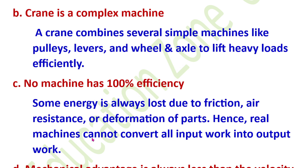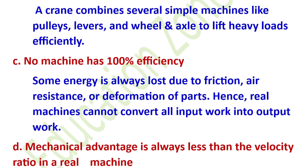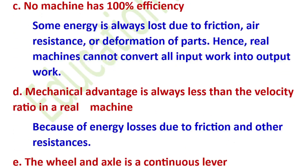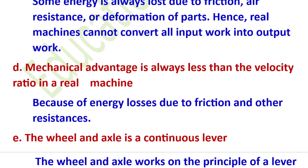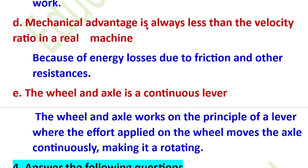Hence, the real machine cannot convert all input work to output work. Mechanical advantage is always less than velocity ratio in a real machine because energy loss is due to friction and other resistances.